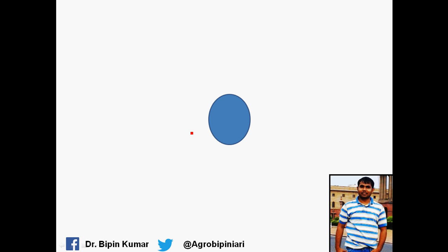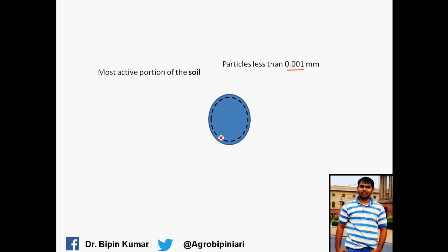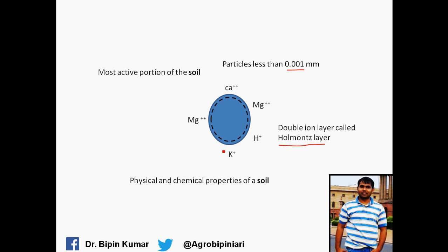First of all, Soil Colloids are minute particles, and their size is actually less than 0.001 mm. This is the most active portion of the soil. The inner surface is embedded with negative ions, and because of these negative ions it will absorb positive ions on the outer layer, forming a double ionic layer. This double ionic layer is called the hormone layer.